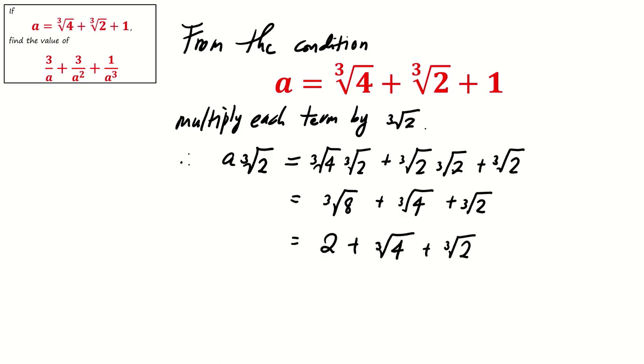We can let the original condition as equation 1 and the equation newly formed as equation 2. We see that there are two identical terms found in equation 1 and equation 2, which are cube root of 4 and cube root of 2. So we consider equation 2 minus equation 1.